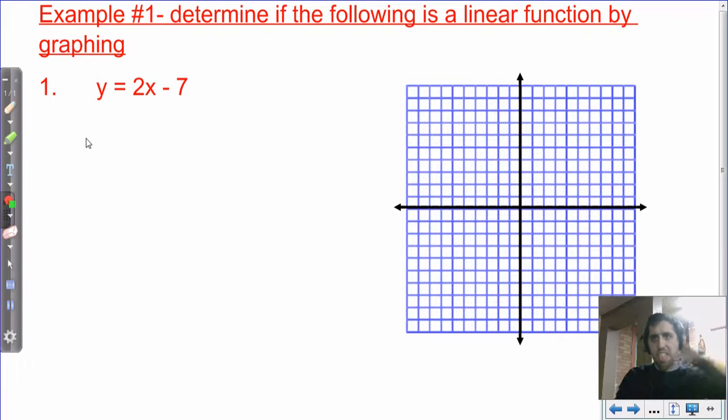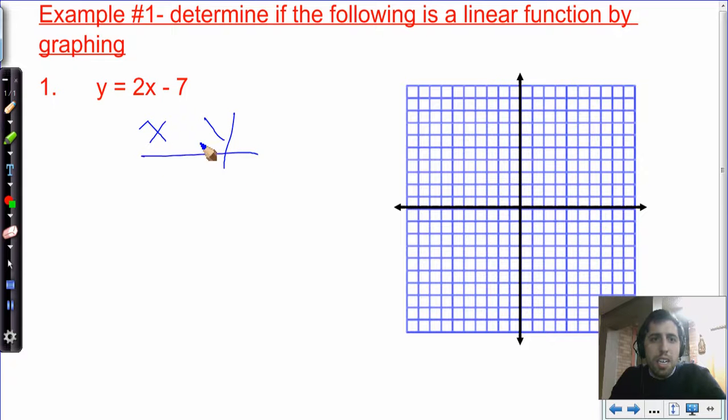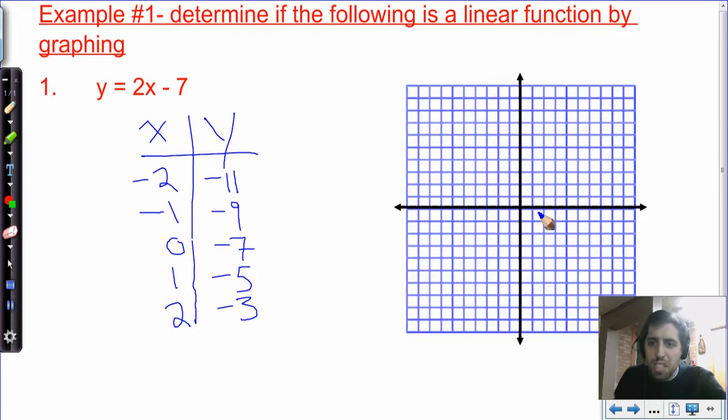Number one, determine if the following is a linear function by graphing. So we know that we can graph pretty easily by using an x, y chart. In this case, I like to just use these five independent variables or inputs. Negative 2, when I plug in negative 2, I get negative 4 minus 7 is negative 11. Negative 1 times negative 2 is negative 2 minus 7 is negative 9. 0 minus 7 is negative 7. 1 times 2 is 2 minus 7 is negative 5. And 2 times 2 is 4 minus 7 is negative 3. Now, I'm not going to graph that first one because I want to leave our chart just with a scale of 1.